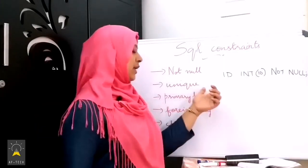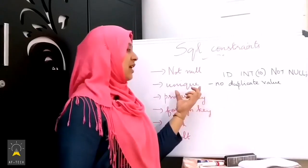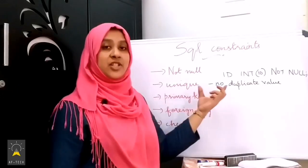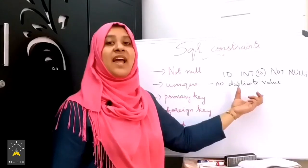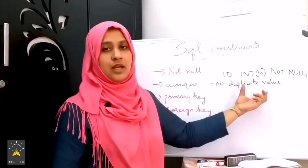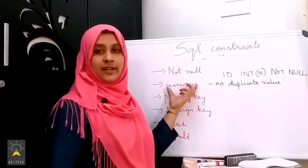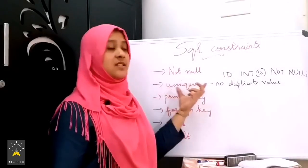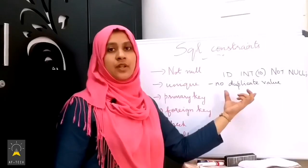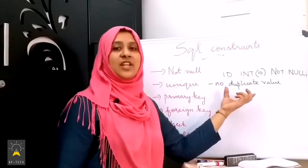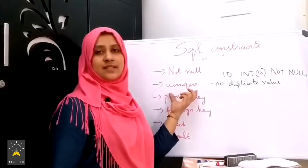Next is the UNIQUE constraint. The UNIQUE constraint ensures that a column value must not have a duplicate value. If you declare a column as UNIQUE, then all entries in that column must be unique — duplication is not allowed.